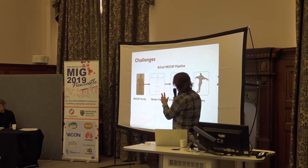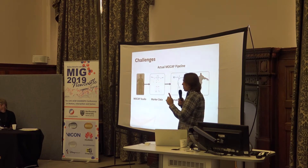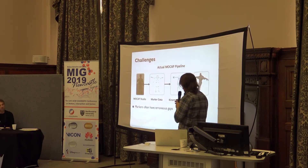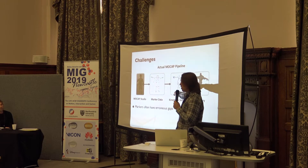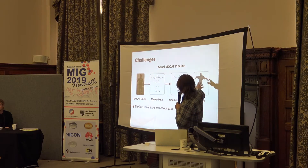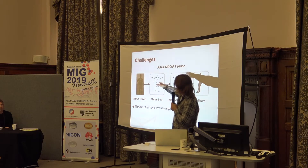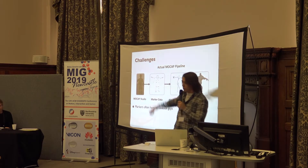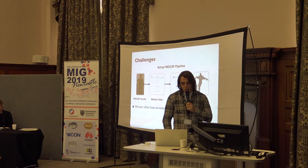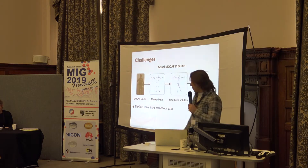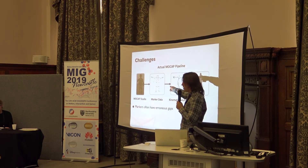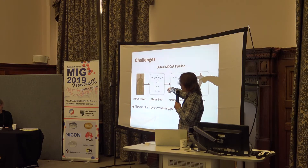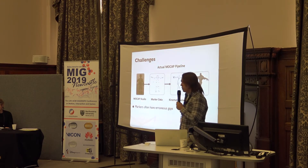There are two key ideas here. Idea number one is that with each step you lose quality — you're getting further from the original ground truth. The second idea is that this first step is very important: if you don't correctly get the markers from your original data, you're not going to get good results.